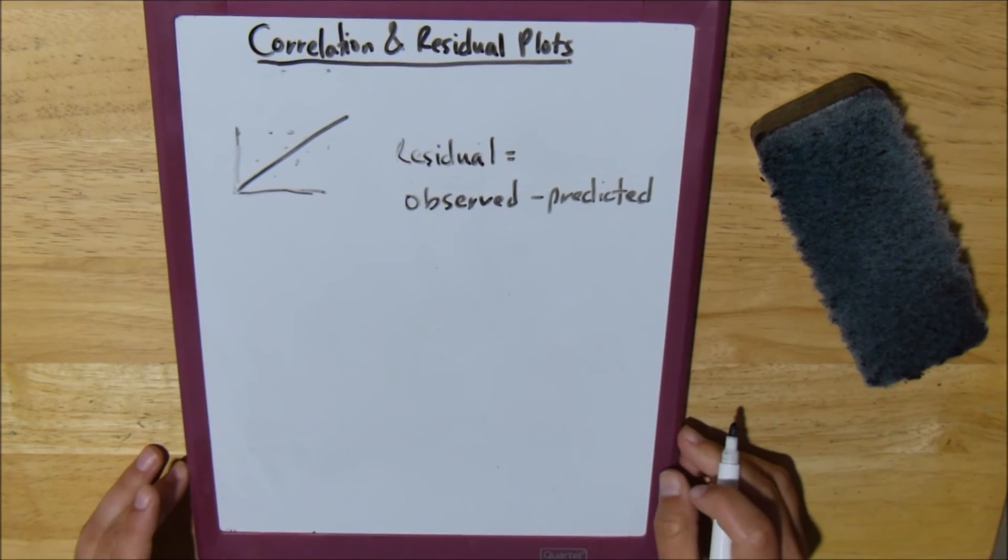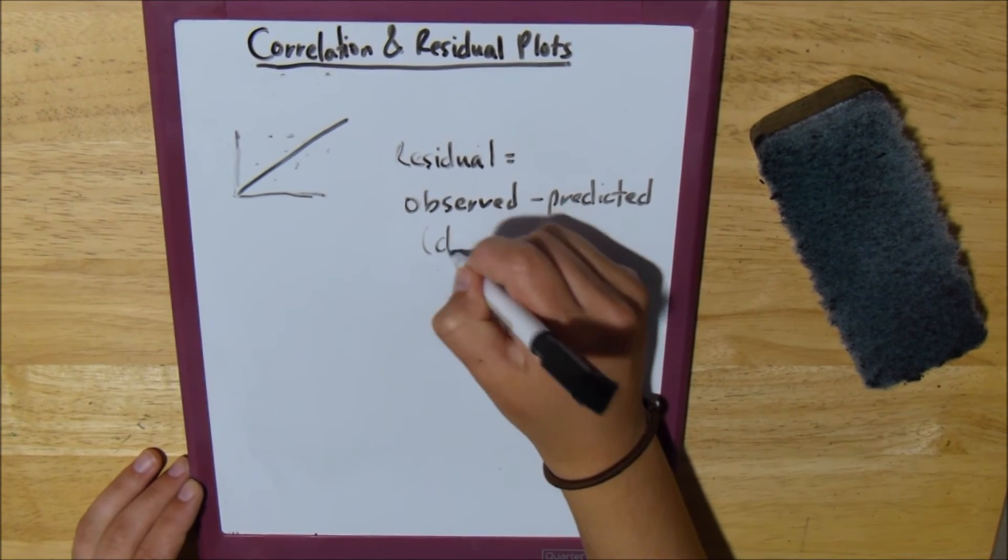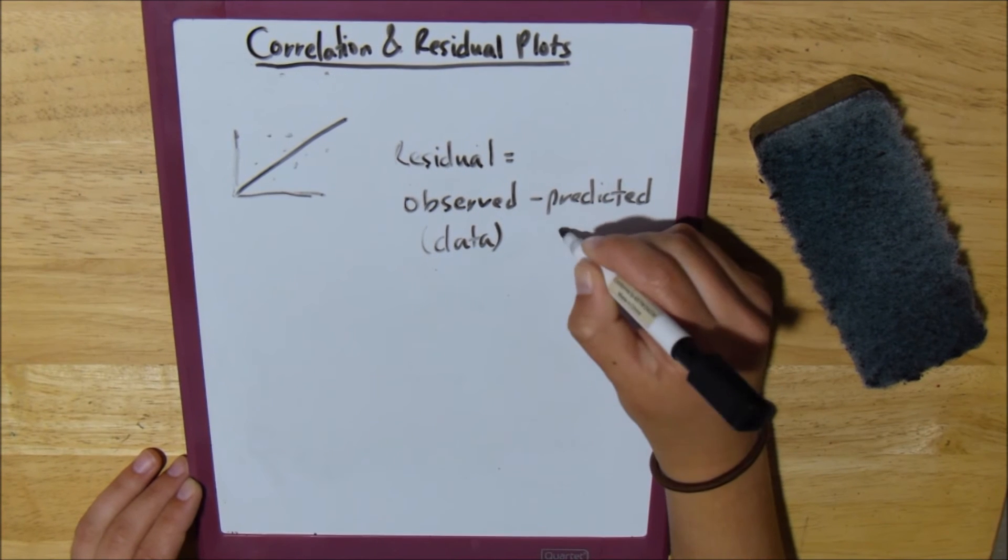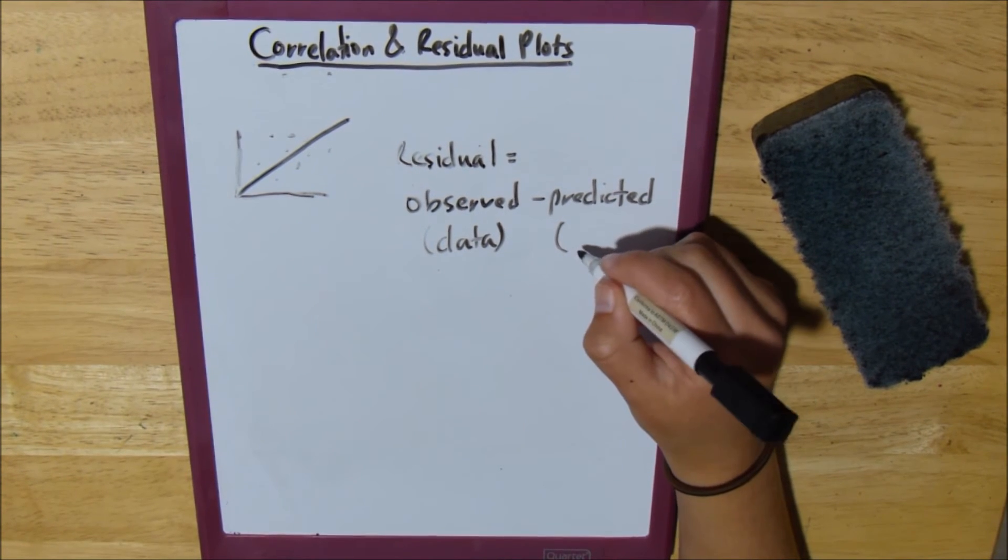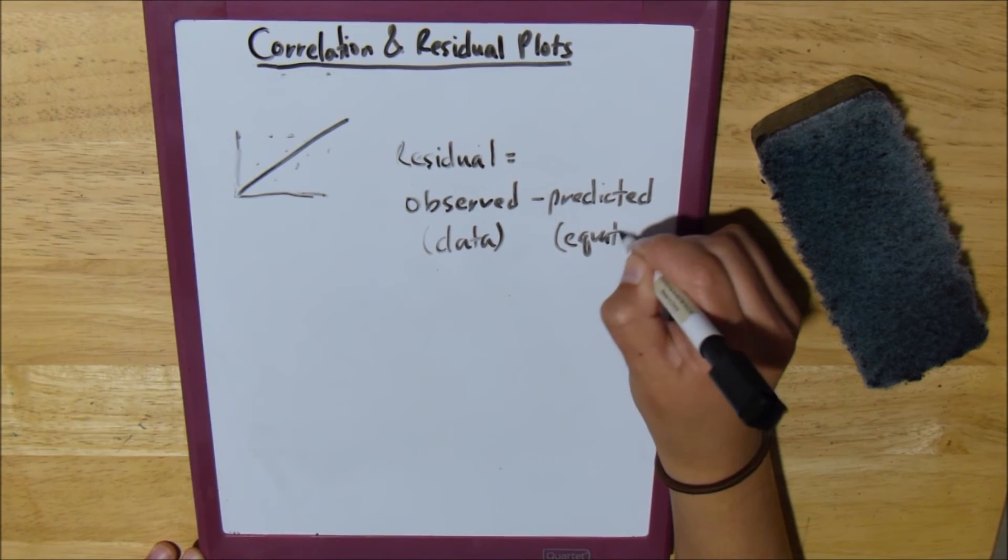So, observed is your data, and then predicted is your equation, basically the line of best fit.